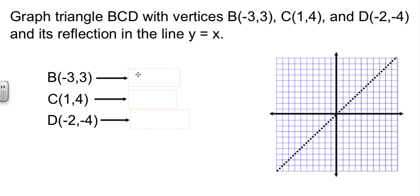Now let's find the values of these new points. B, which is at negative 3, 3, becomes 3, negative 3. The two values trade places. C at 1, 4 becomes c prime at 4, 1. And d, negative 2, negative 4, becomes d prime, negative 4, negative 2.